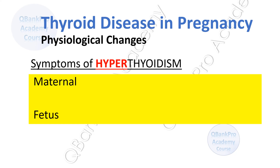The fetus may experience a high fetal heart rate over 160 beats per minute, fetal goiter, poor growth, and advanced bone age. If hyperthyroidism is severe, cardiac failure may occur. It is very important to monitor the fetus for fetal thyrotoxicosis, as well as fetal growth and weight.